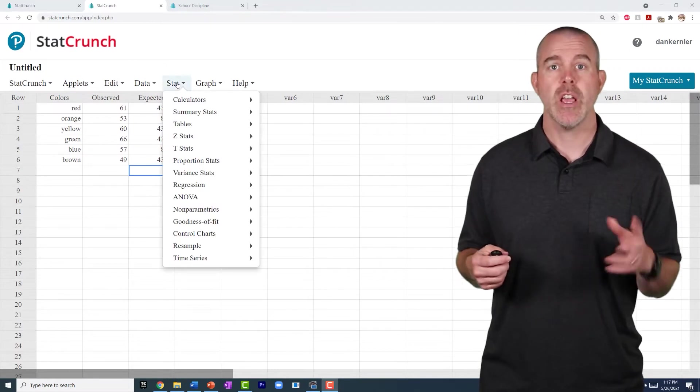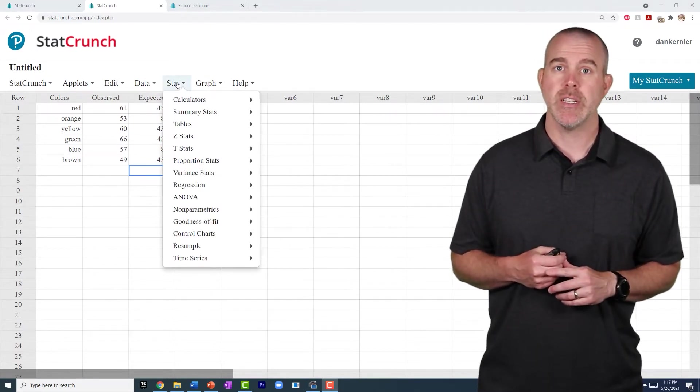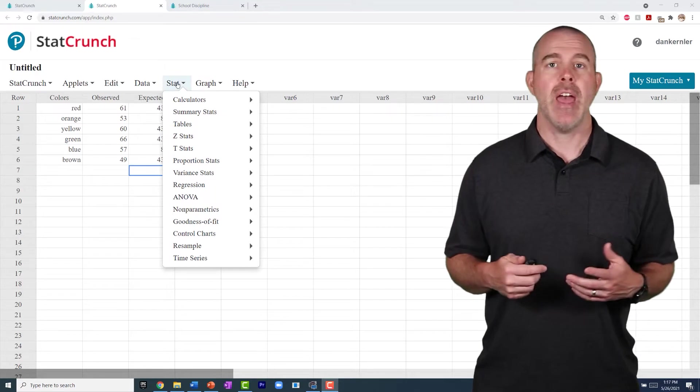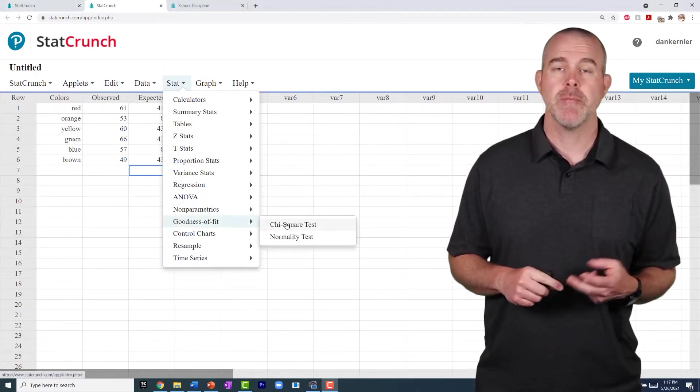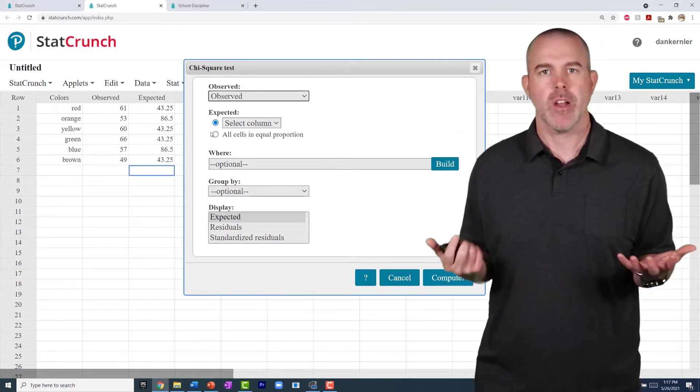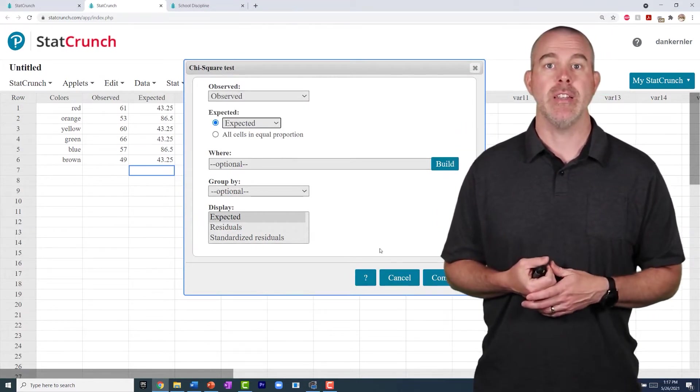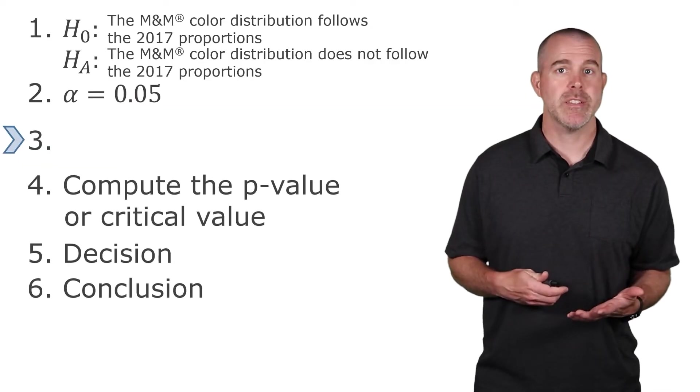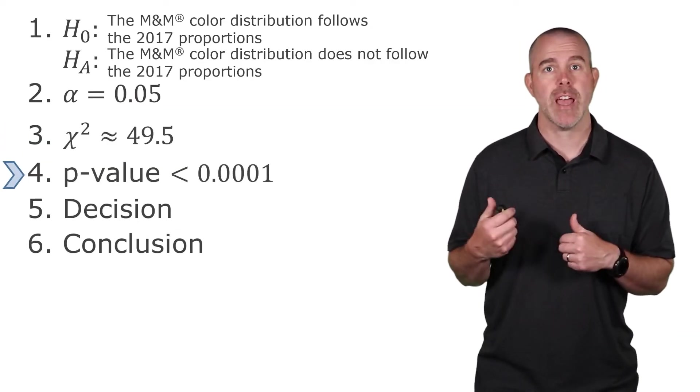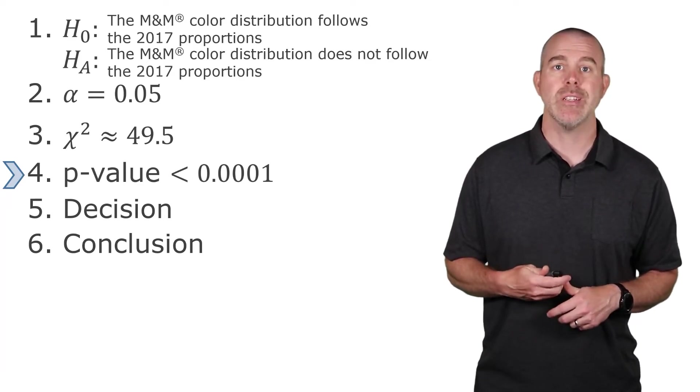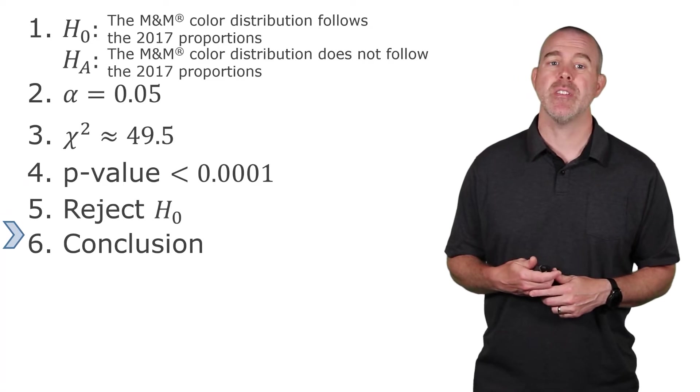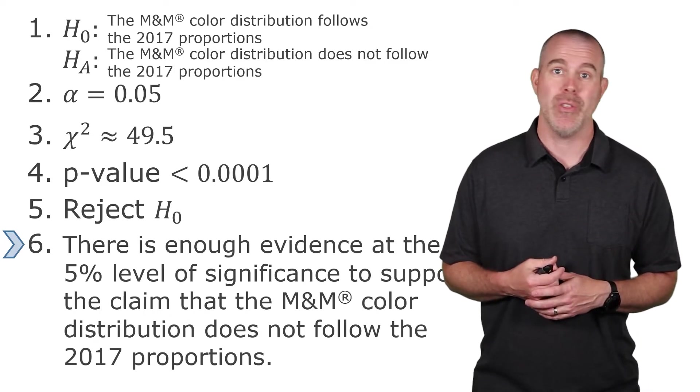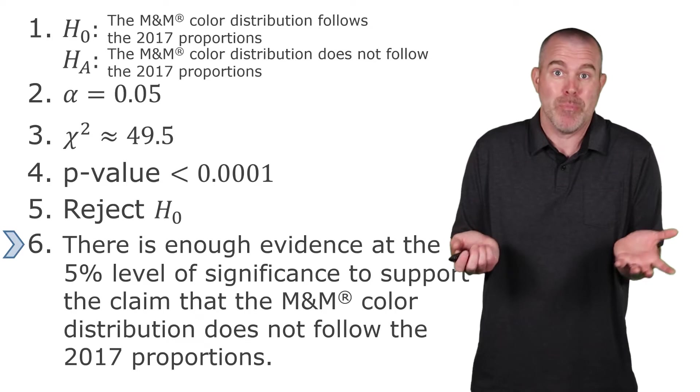You can also do this in StatCrunch. You do have to manually compute those expected values. That's the total times the percent you expect in each category. I have those in here. And then, it's just stat, goodness of fit. And then, we're going to choose the observed. And you have to pick the column. So, that's our observed column. And then, expected column. That's in the expected column that I've already typed in. Hit compute. And we get the same 49.5. So, we have our test statistic, 49.5. Our p-value from the StatCrunch output there, less than 1 in 10,000. That's super rare. That means we reject the null hypothesis. Which means, pretty obviously, that there is enough evidence to say they don't follow those proportions.